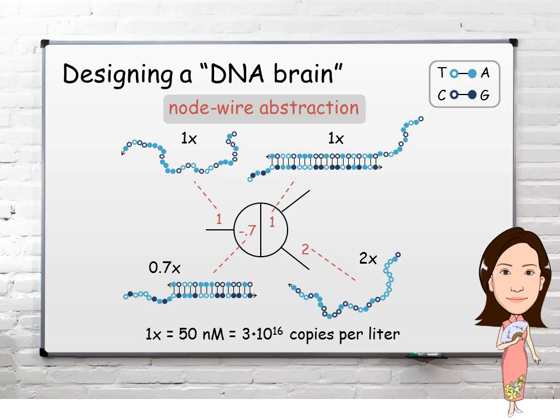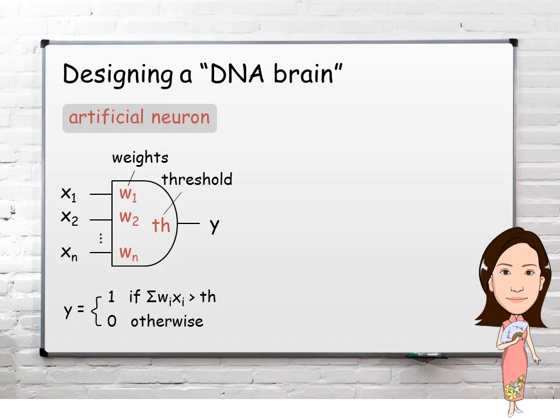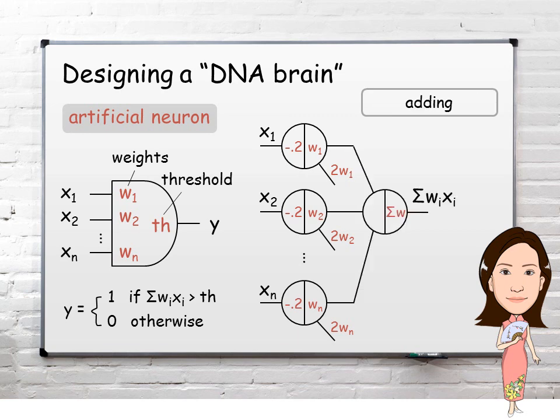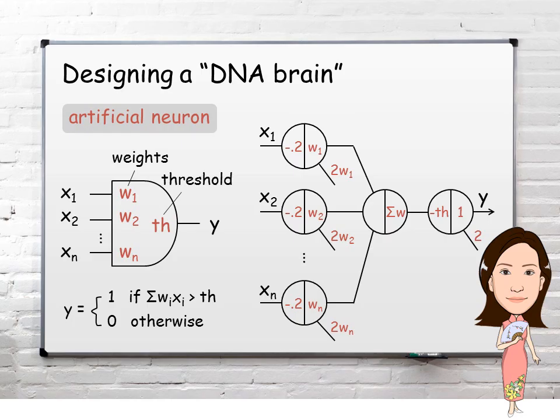To implement an artificial neuron, each input has a weight applied to it. All weighted inputs are added together. If the sum exceeds a threshold, the output will be one, otherwise it will remain zero. The nodes and wires are systematically translated into DNA molecules.